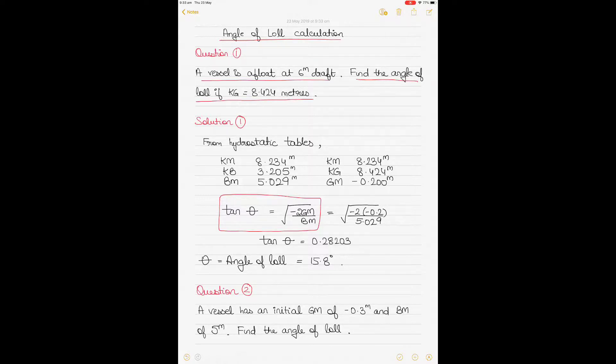So we have to know the values of GM and BM before we can find out the angle of loll. To do so, we will go into the hydrostatic tables and find out the value of KM and KB, from which we can find out the value of both BM and GM.